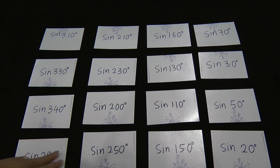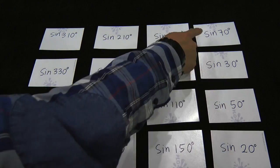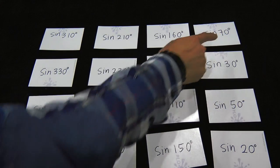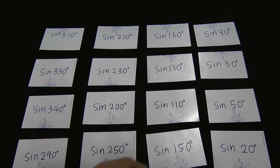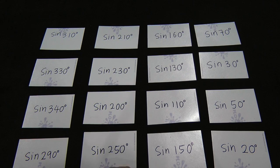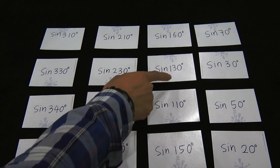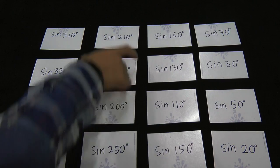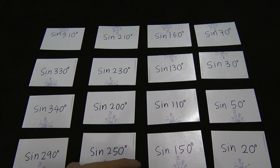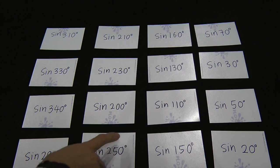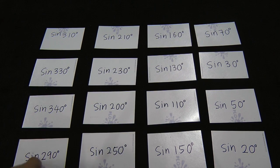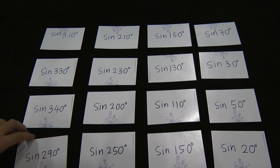From the cards you can see that the first row is the first quadrant because the angle is between 0 to 90. The second row is the second quadrant because the angle is between 90 to 180. The third row is the third quadrant because the angle is between 180 to 270. And the last row is the fourth quadrant, where the angle is between 270 to 360.